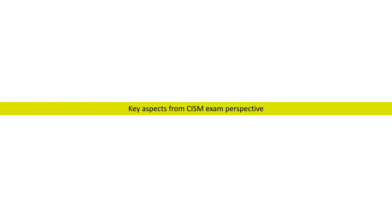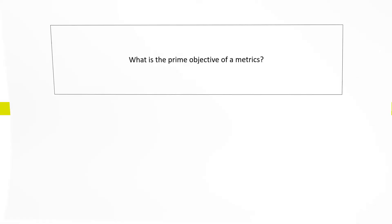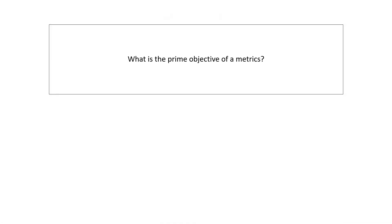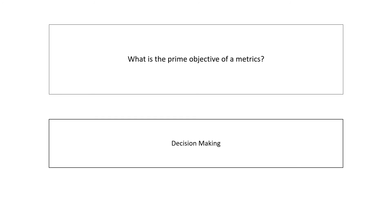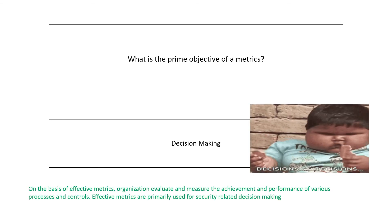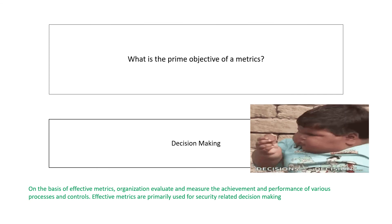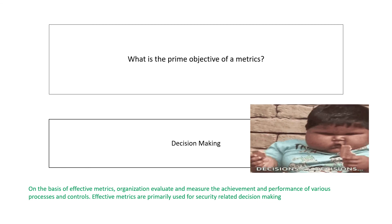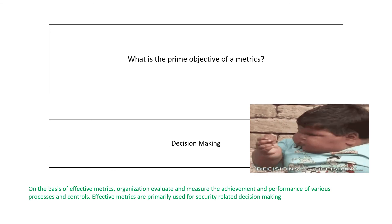Let us now discuss some key aspects from an exam perspective. The question is: what is the prime objective of a metric? Your answer should be decision making. On the basis of effective metrics, organizations evaluate and measure the achievement and performance of various processes and controls, and on the basis of this, they can take effective decisions.